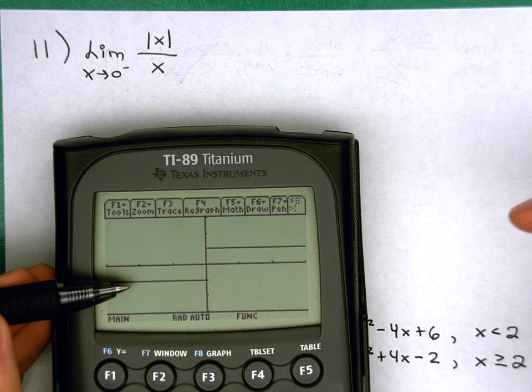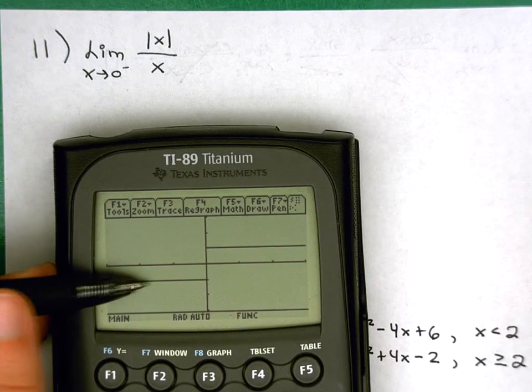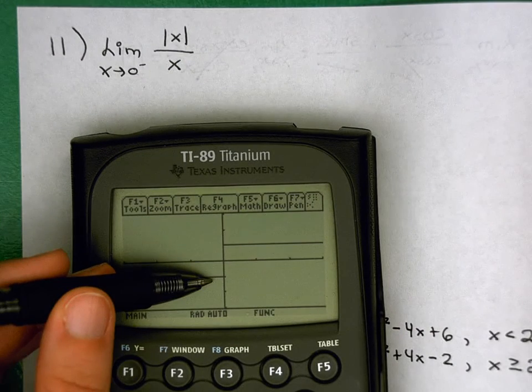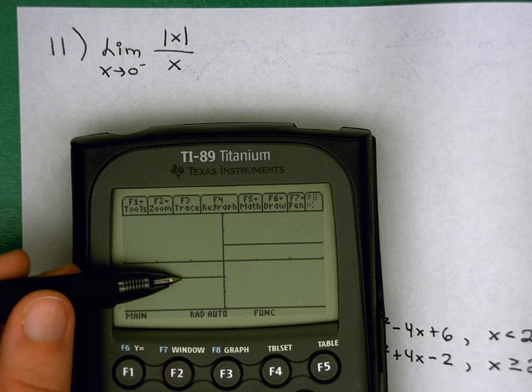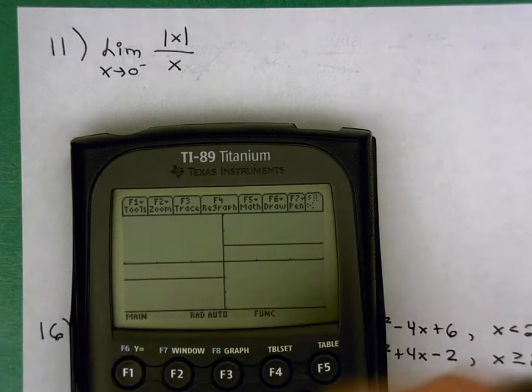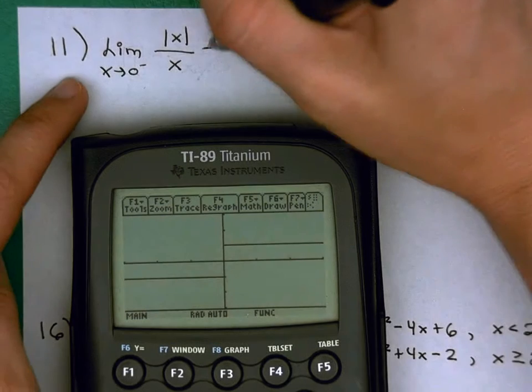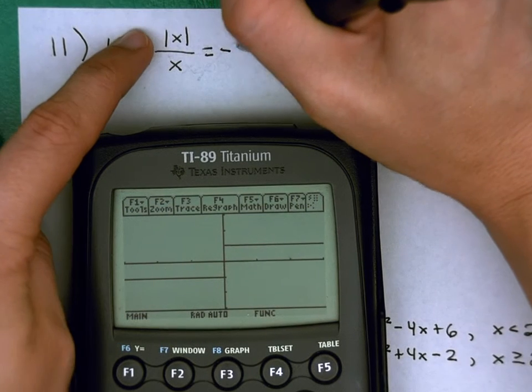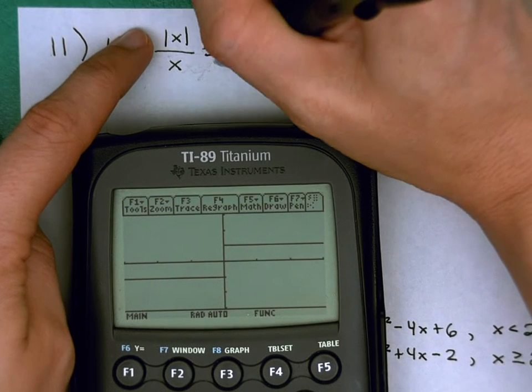And we're coming to x equals 0 from the left. Well, as I come into x equals 0 from the left here, the y value it looks like I'm approaching is y equals negative 1. So as I approach 0 from the left of absolute value of x over x, my answer is negative 1.